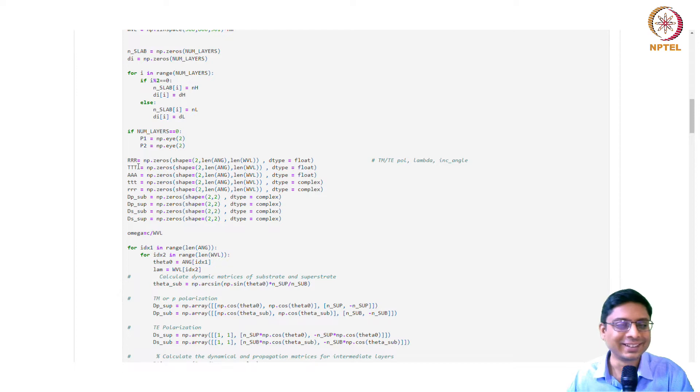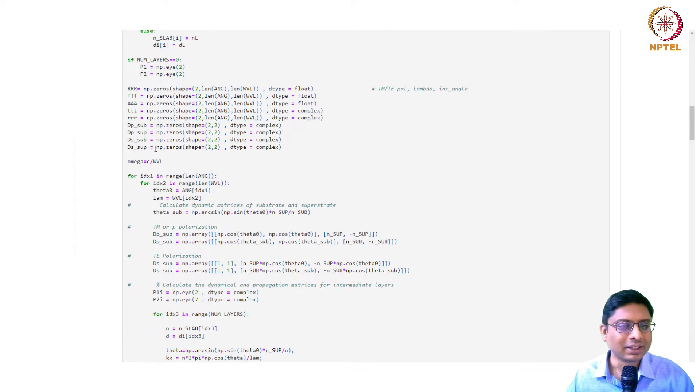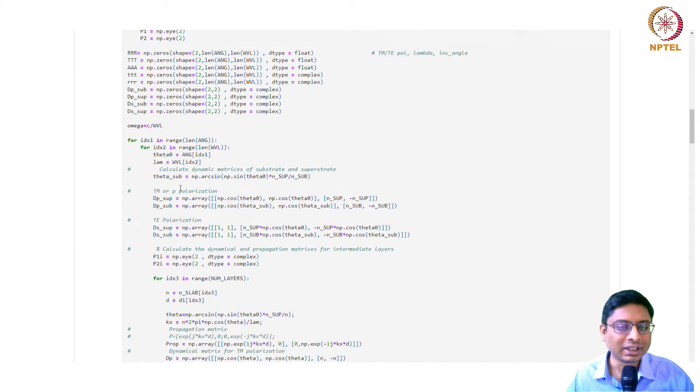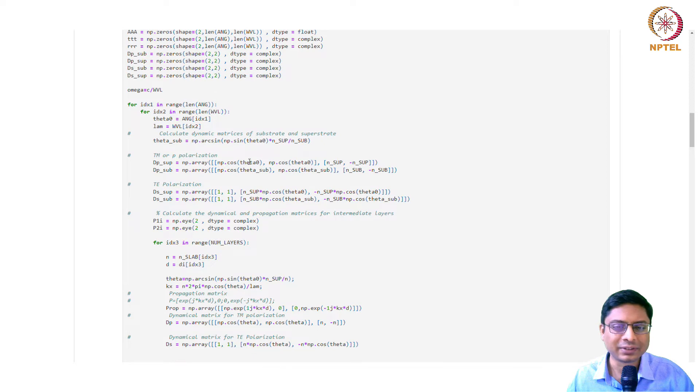The code is more or less self-explanatory if you follow the formulation. There are basic flags to make sure we don't compute wrongly for the case of zero layers. These are variables we are defining to capture the reflection coefficient. My notation RRR is that the first dimension is TE or TM polarization, second dimension is angle, third dimension is wavelength.